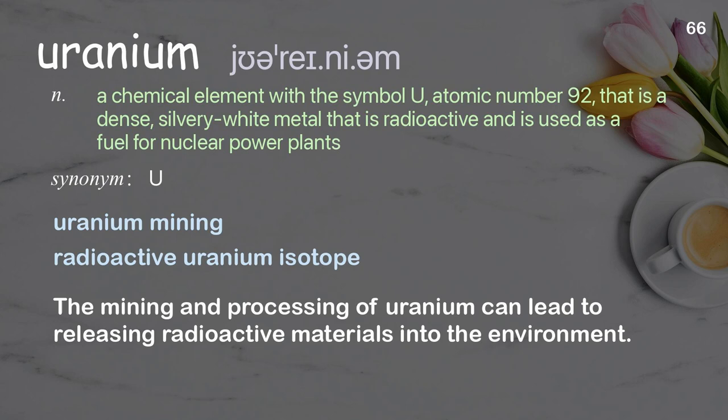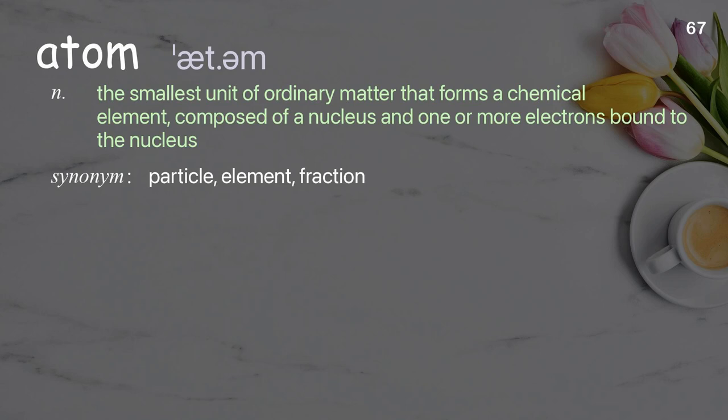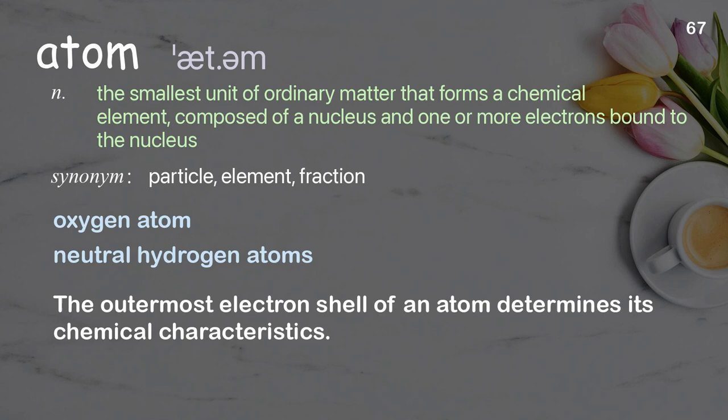Atom: the smallest unit of ordinary matter that forms a chemical element, composed of a nucleus and one or more electrons bound to the nucleus. Examples: oxygen atom, neutral hydrogen atoms. The outermost electron shell of an atom determines its chemical characteristics.